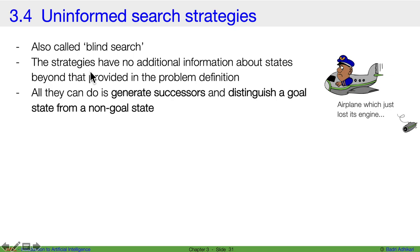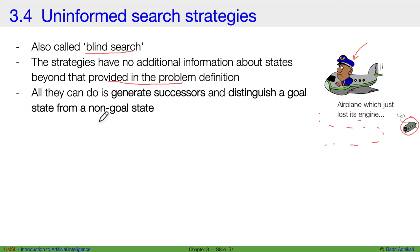Let's start with the first category: uninformed search algorithms, also known as blind search algorithms. These strategies have no additional information about the states beyond what's provided in the problem. It's like an airplane pilot who has lost an engine and has no idea where to search for it — the engine could be anywhere. These algorithms generate all possible successors and distinguish a goal state from a non-goal state, checking each one in turn.